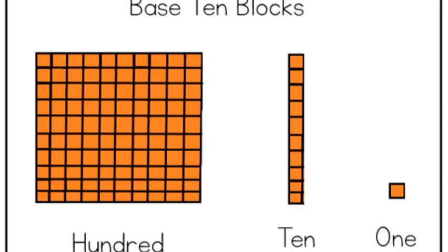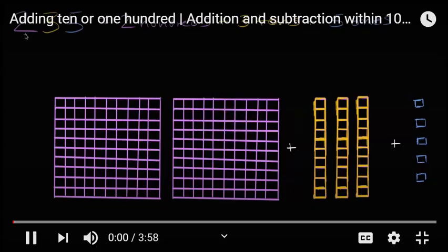All right. We're going to take a look at some base 10 blocks. So here we have some base 10 blocks. 1s, 10s, and 100s. We have 1 one, 1 ten, 1 hundred. There are 10 1s in a 10. There are 10 10s in a 100.